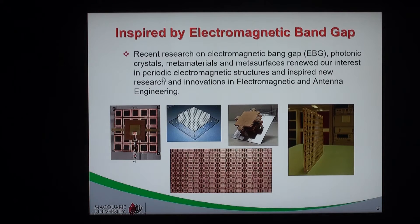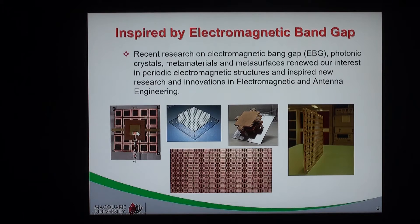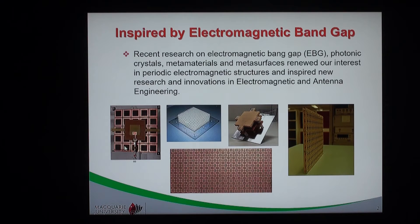They are made out of periodic electromagnetic structures. A few examples are shown here. This one is an ultrawideband antenna with an ultrawideband reflector — a quite simple printed UWB antenna with a white floor. This is the ultrawideband reflector that has been designed to convert this antenna from a bidirectional antenna to a unidirectional antenna. You can see the 2D periodicity of the reflector here.